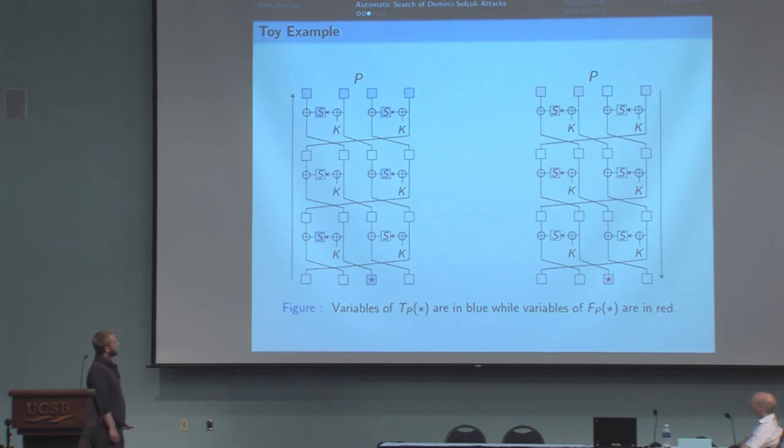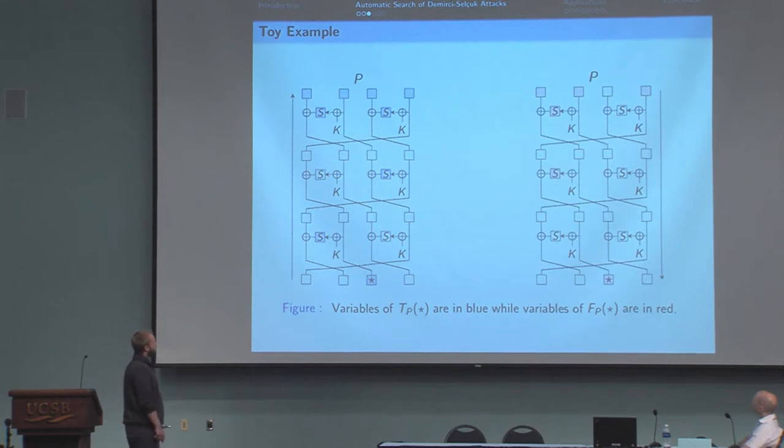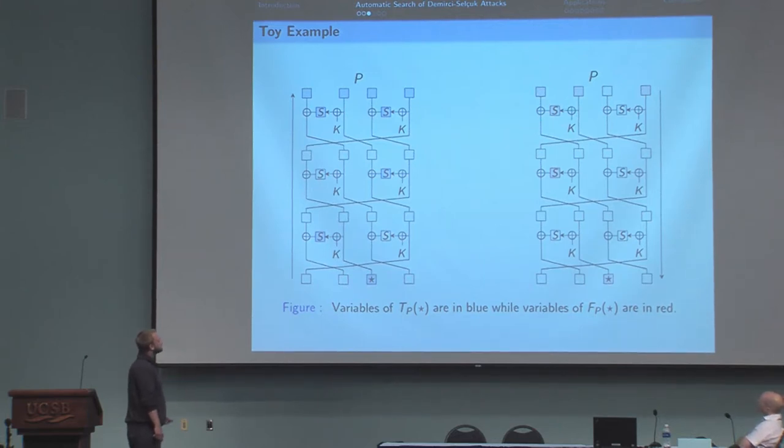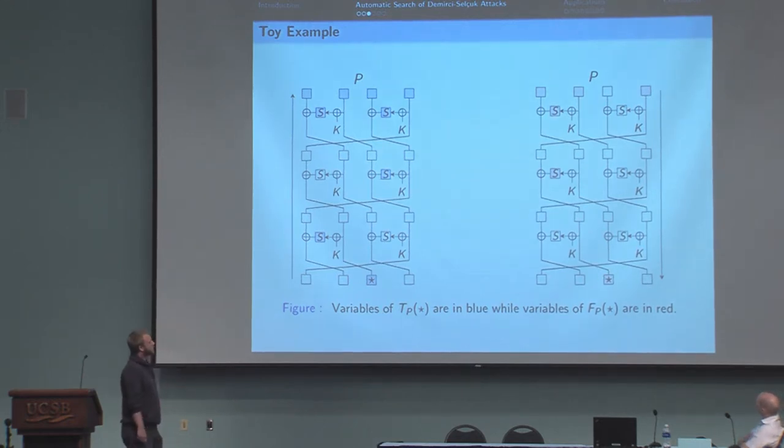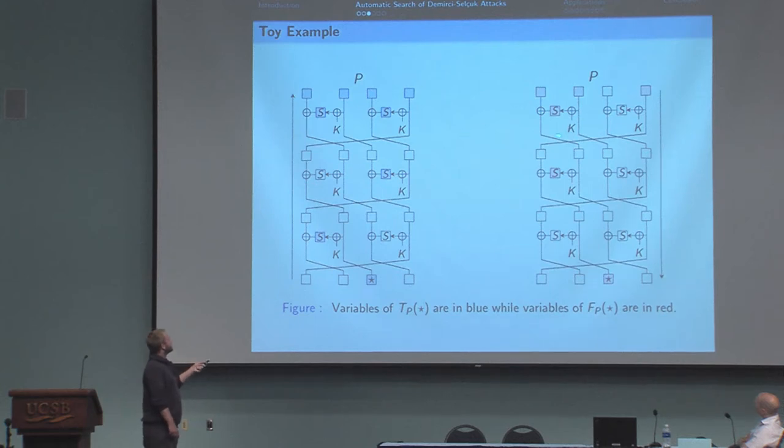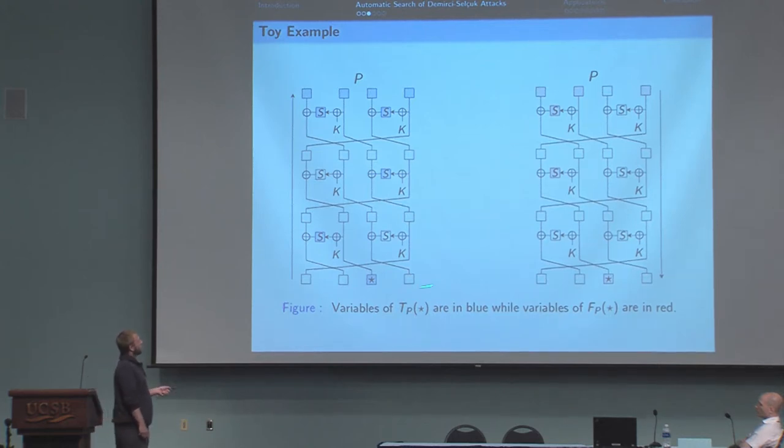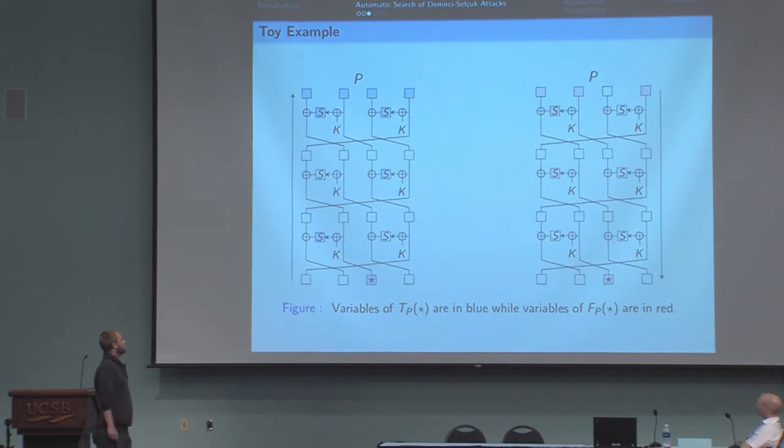If you know the state variables that go through the red S-boxes, then you can propagate the differences from the plaintext to the variable with a star. You may remark that those sets are distinct. Actually, this is always the case for Feistel networks. But for most of SPN, as for instance on AES, both those sets are equal, as well as TC and FC.